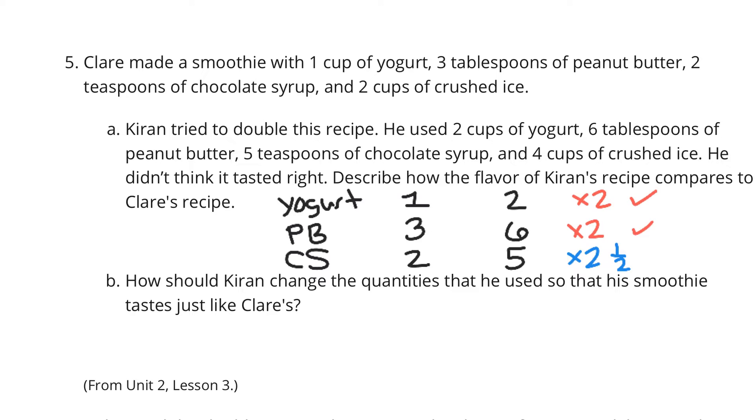Let's just double-check the ice, though. Make sure it didn't get watered down or something. For the ice, Claire had 2 cups. Kieran had 4 cups, so still multiplied by 2 to double that. So where was our difference here? It was in this chocolate syrup. Where if he were to double this, we would be sitting at 4 teaspoons of chocolate syrup.